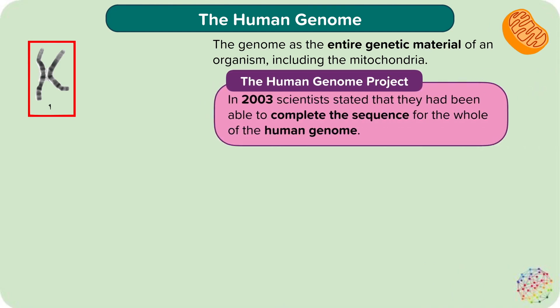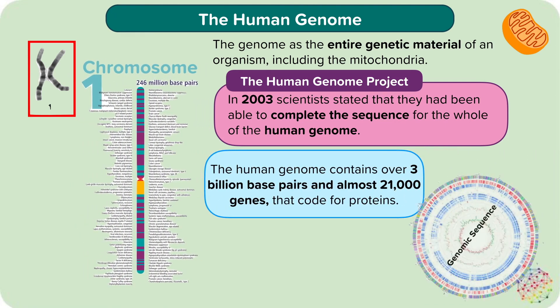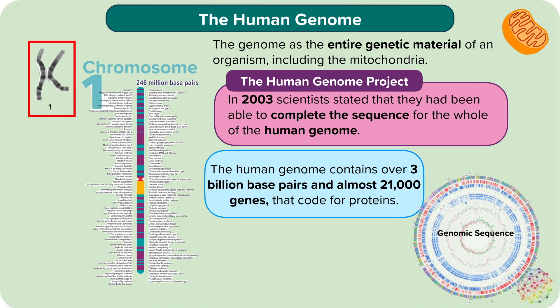In 2003, scientists stated that they had been able to complete the sequence for the whole of the human genome. The project was called the Human Genome Project, and involved scientists from all over the world collaborating, using technological advancements to chop up DNA and read the sequence. This meant the project was delivered two years early and under budget. The human genome contains over 3 billion base pairs and almost 21,000 genes coding for proteins.